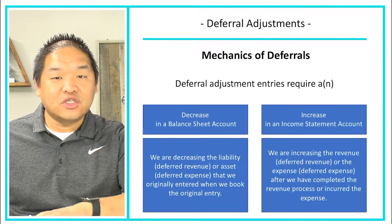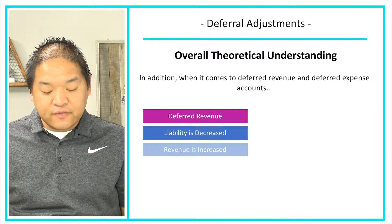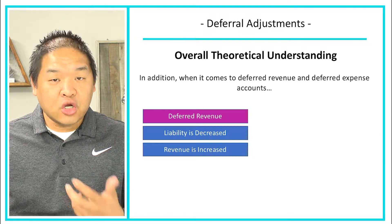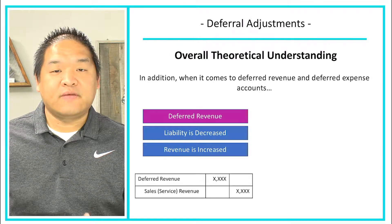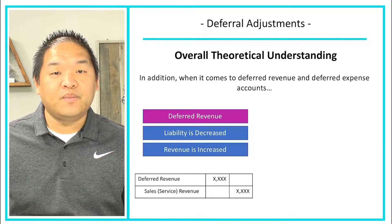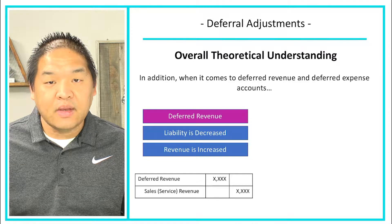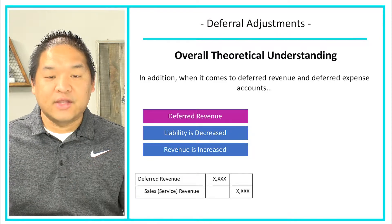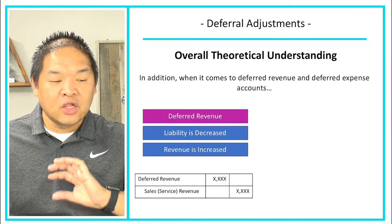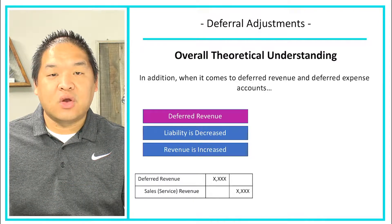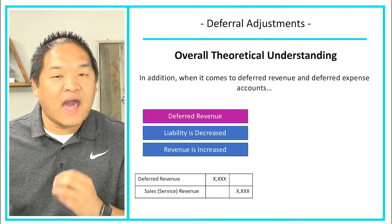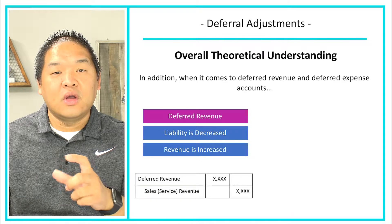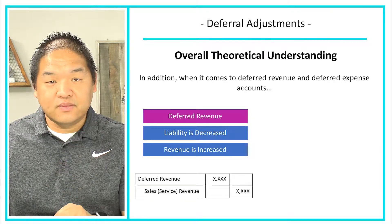For a deferred revenue, the liability is decreased because we no longer owe it to our customers, and the revenue is increased. From a journal entry standpoint, we debit deferred revenue — that gets rid of the liability — and then we credit sales or service revenue. Don't get too locked into these account names; they can change based on how we originally booked it. It's important to understand how we originally booked it, and then we release that deferred revenue when we've earned it.